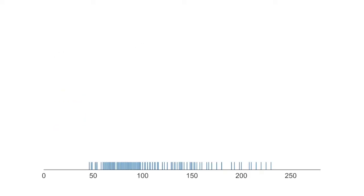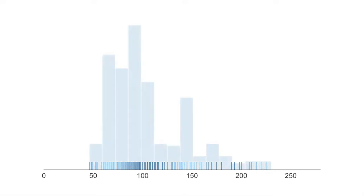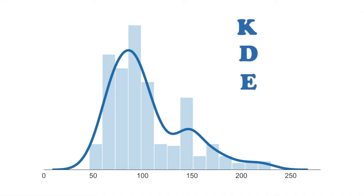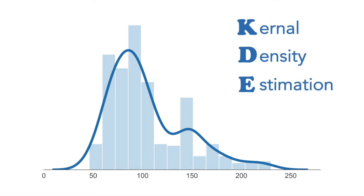So maybe you have some data that looks like this, and you want to get a sense for what the underlying distribution looks like for these data. You probably already know you could create bins and count up the number of values within each bin to create a histogram, but you can also create a smoothed out continuous version of this histogram with something called KDE,